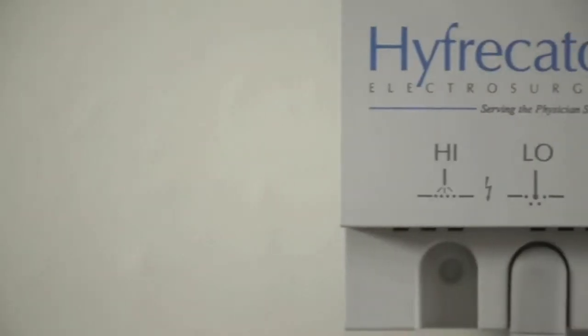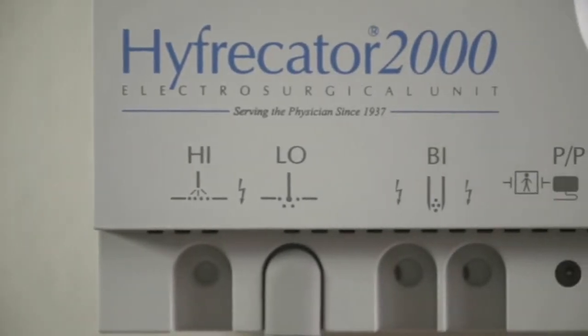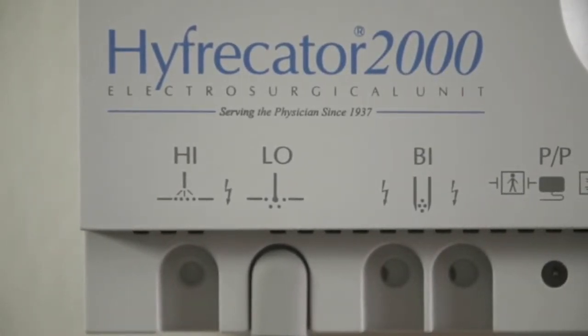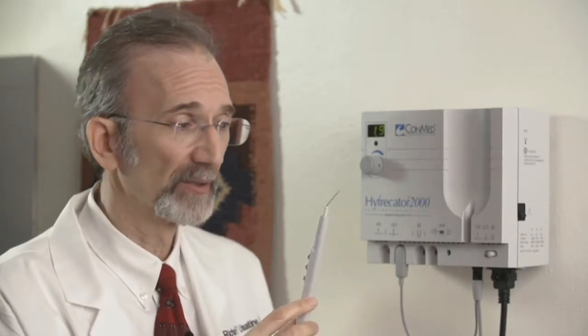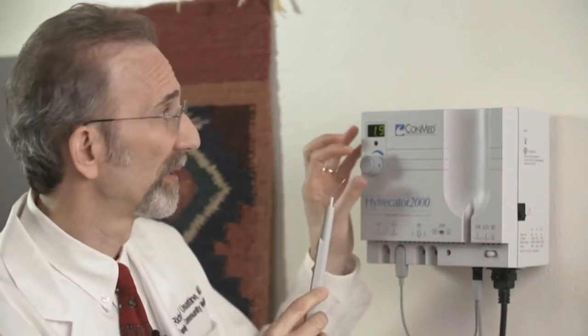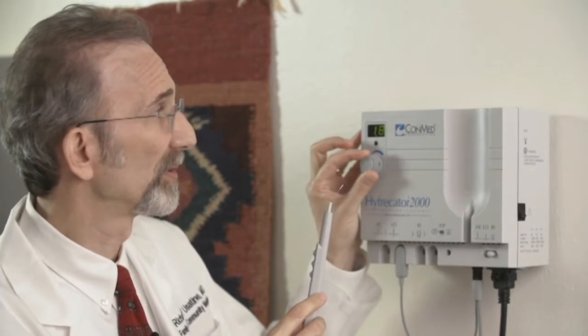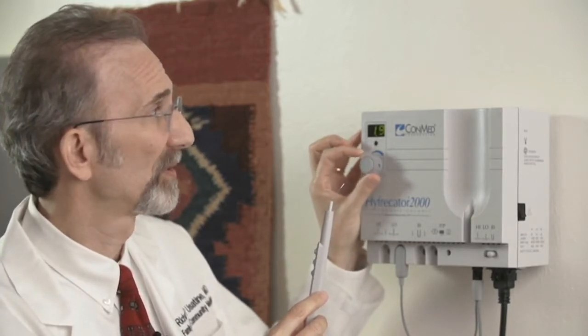The hyfracator 2000 has two main settings, the low and the high, and also there's a bipolar setting. I mostly use the low setting, and the low setting has the ability to start with small numbers, even with decimal points.